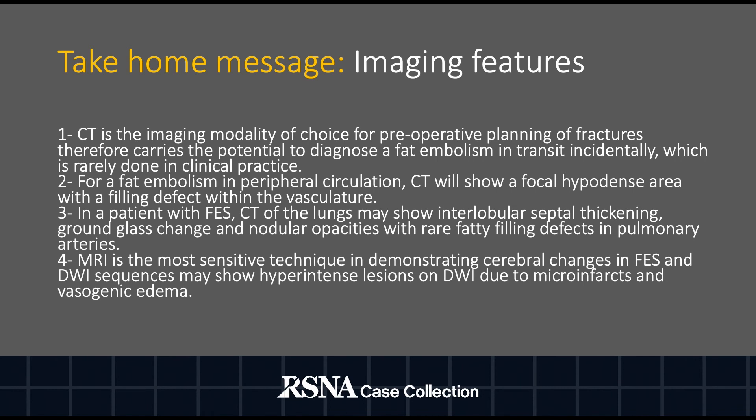In a patient with fat embolism syndrome, CT of the lungs may show interlobular septal thickening, ground glass change, and nodular opacities, with rare fatty filling defects in pulmonary arteries. Magnetic resonance imaging is the most sensitive technique in demonstrating cerebral changes in fat embolism syndrome, and diffusion-weighted imaging sequences may show hyper-intense lesions on DWI due to microinfarcts and vasogenic edema.